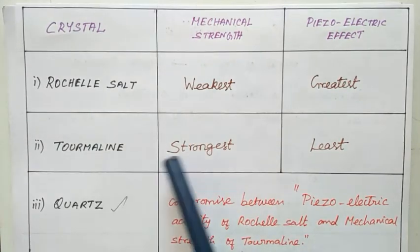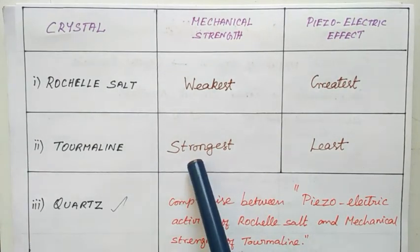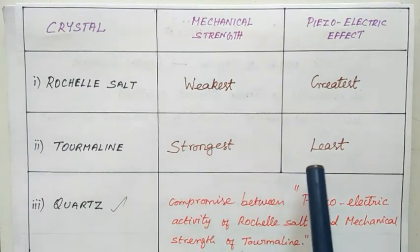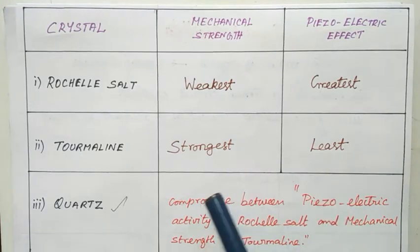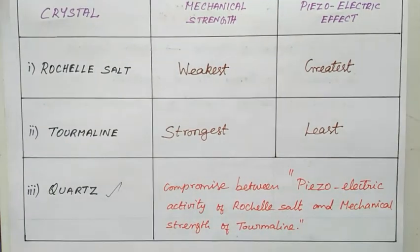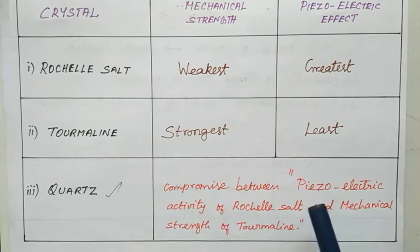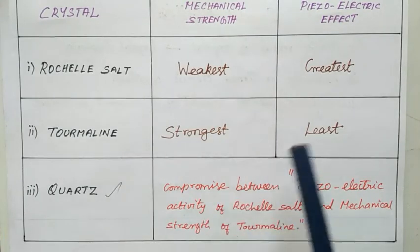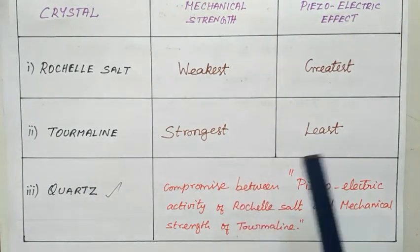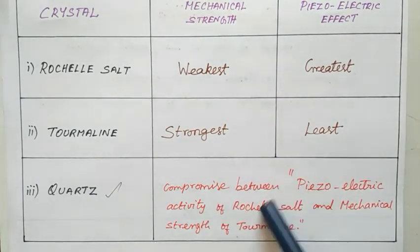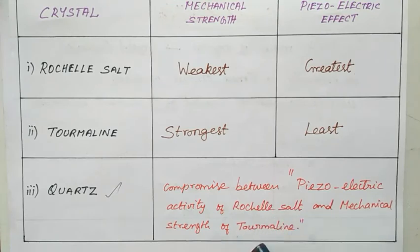The second material is Tourmaline, which has the strongest mechanical strength. During high frequencies it cannot be broken, but it provides the least piezoelectric effect. The third is Quartz, which is a compromise between the piezoelectric activity of Rochelle salt and the mechanical strength of Tourmaline, sitting between these two materials for both properties.